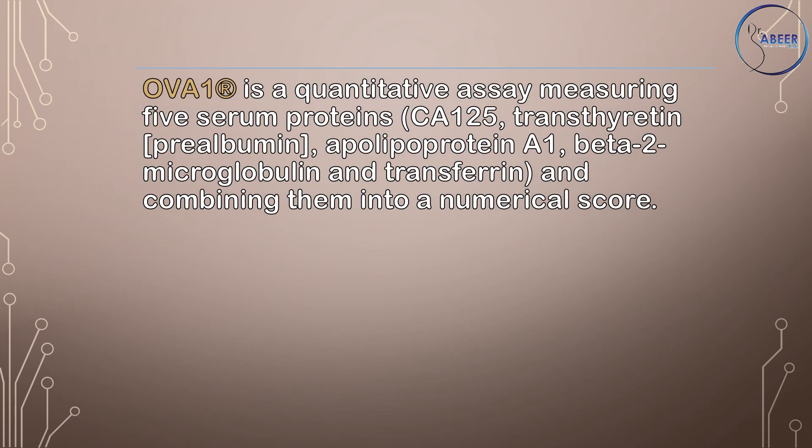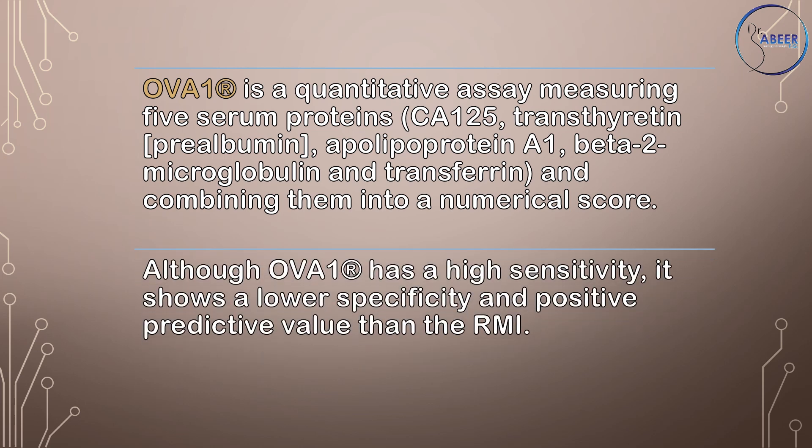OVA1 is a quantitative assay measuring five serum proteins — CA-125, transthyretin, prealbumin, apolipoprotein A1, beta-2-microglobulin, and transferrin — and combining them into a numerical score. Although OVA1 has a high sensitivity, it shows a lower specificity and positive predictive value than the RMI.